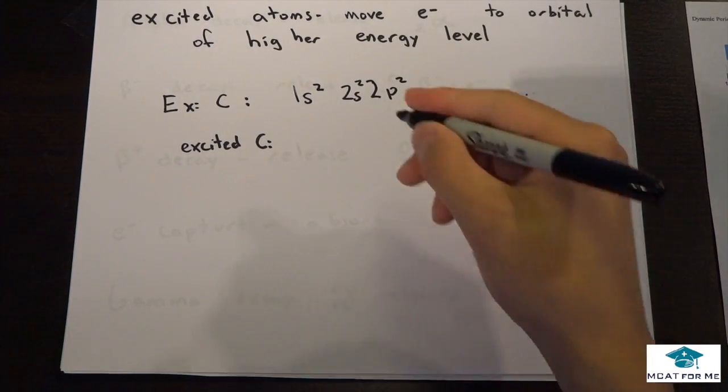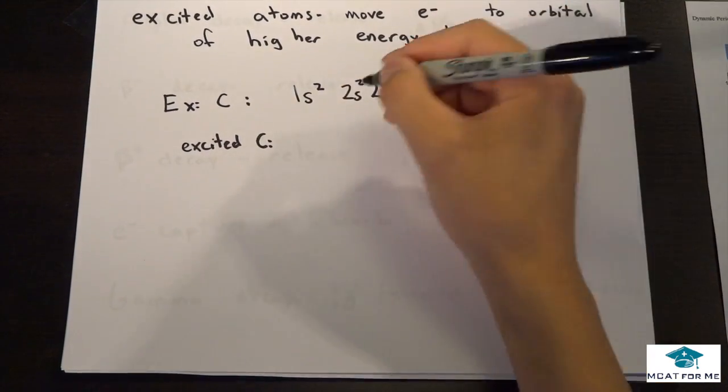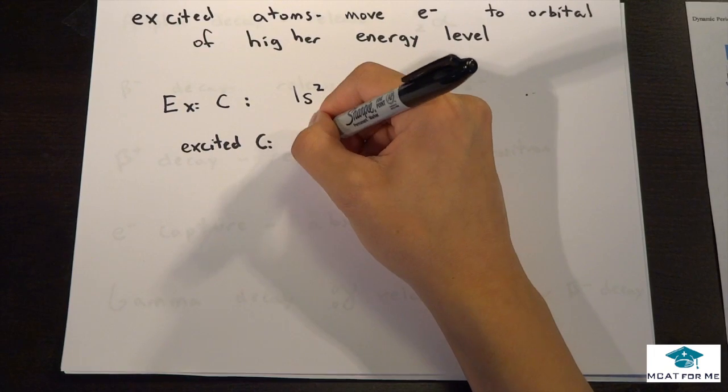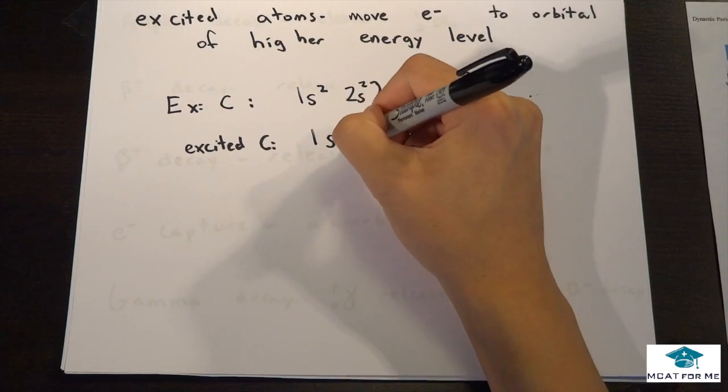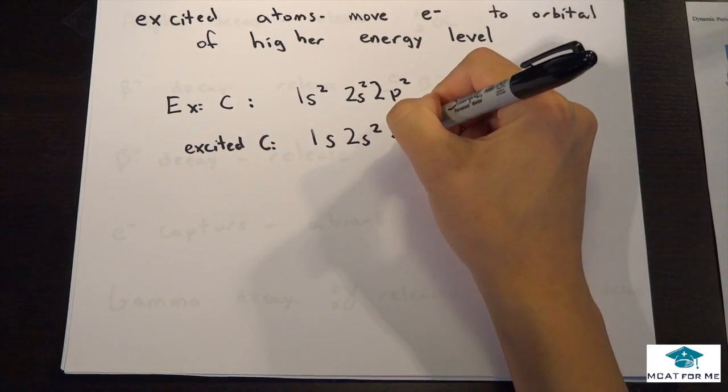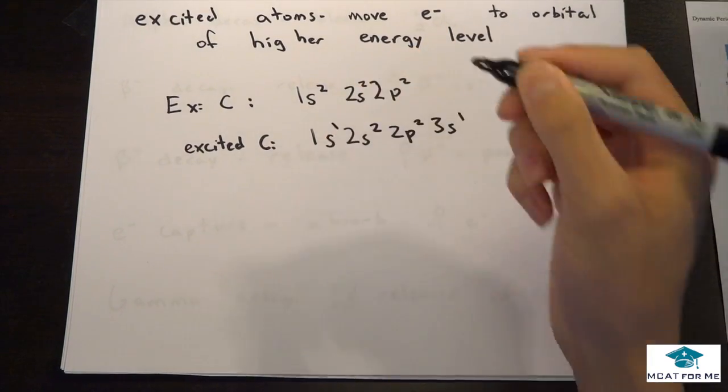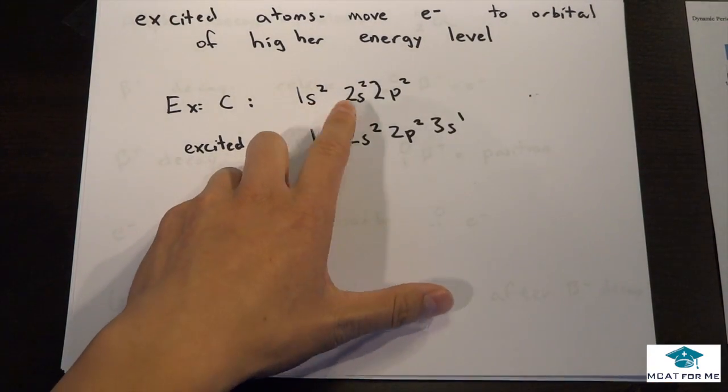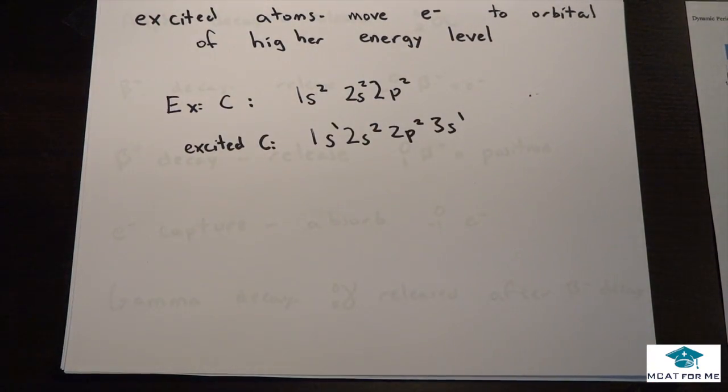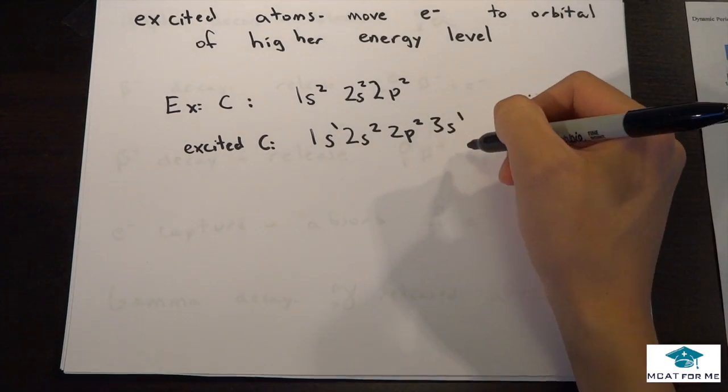So we had an excited carbon. What would that look like? Well, it could look like a couple of things. But for example, this is one that we could see. So we took one electron and we moved it to an even higher energy level. We moved it all the way to the 3s, right?